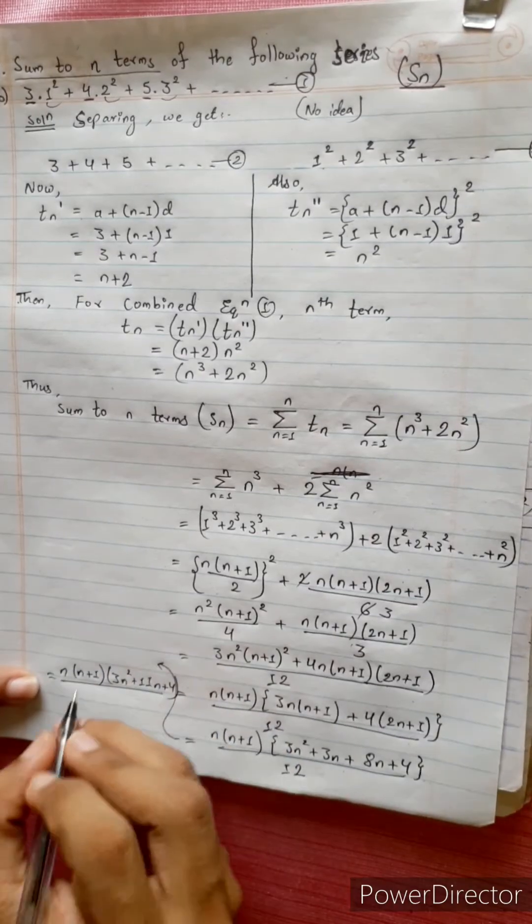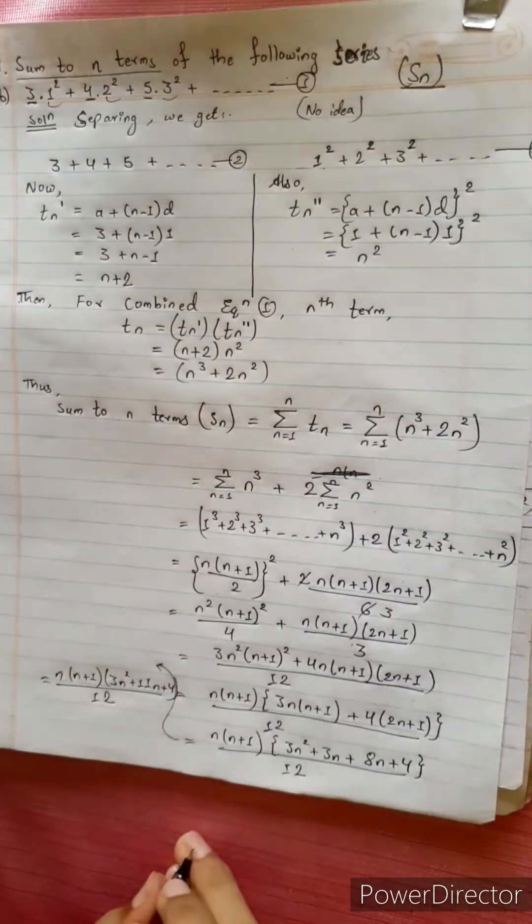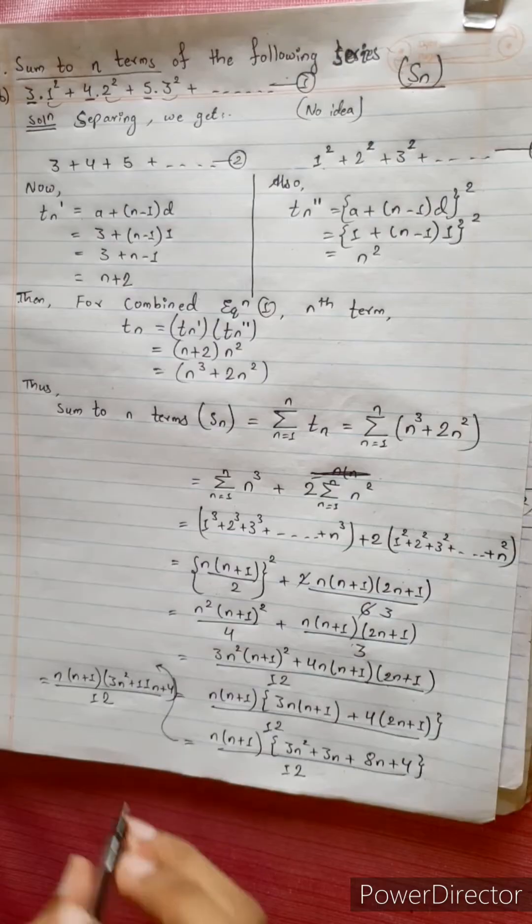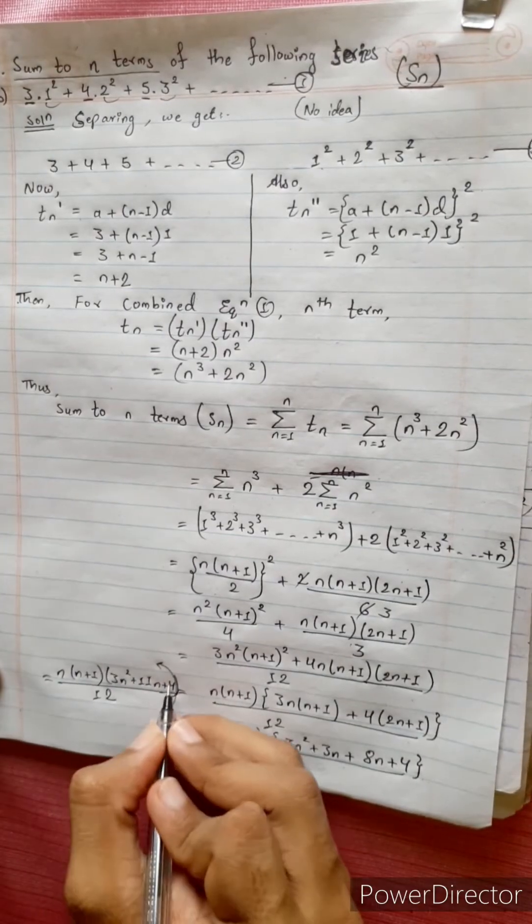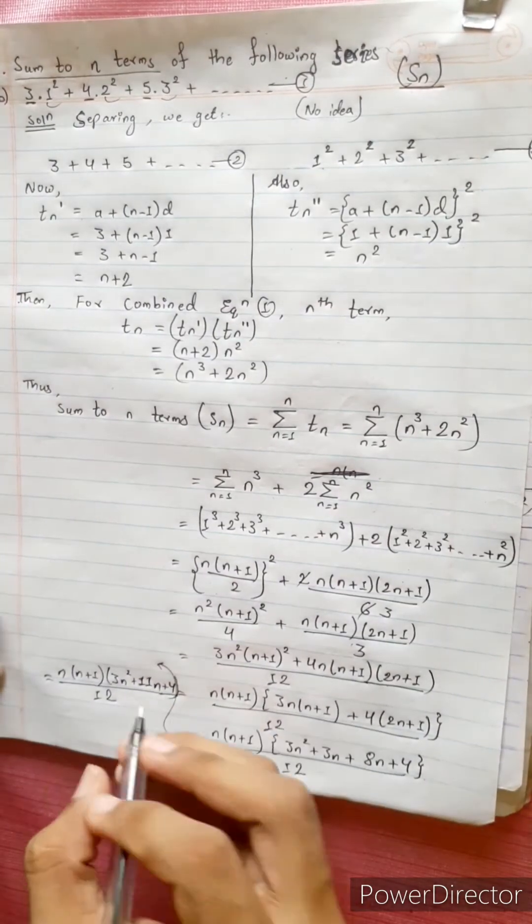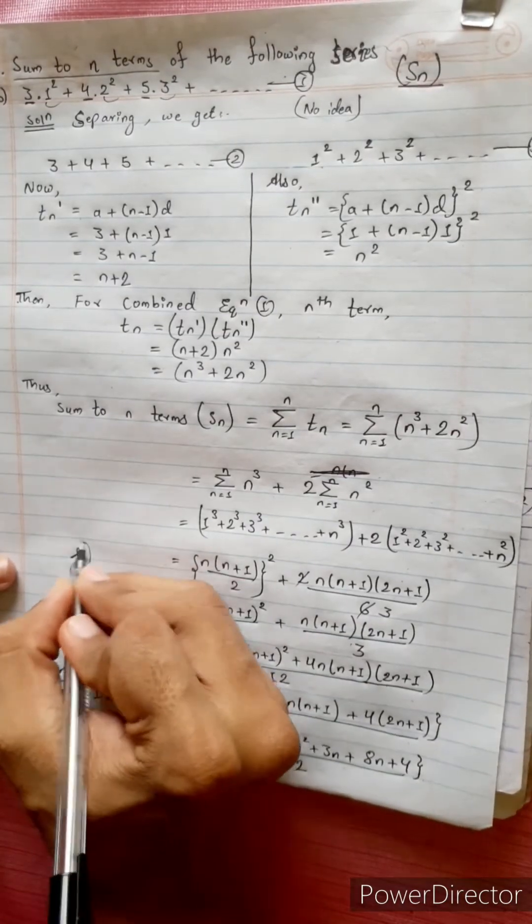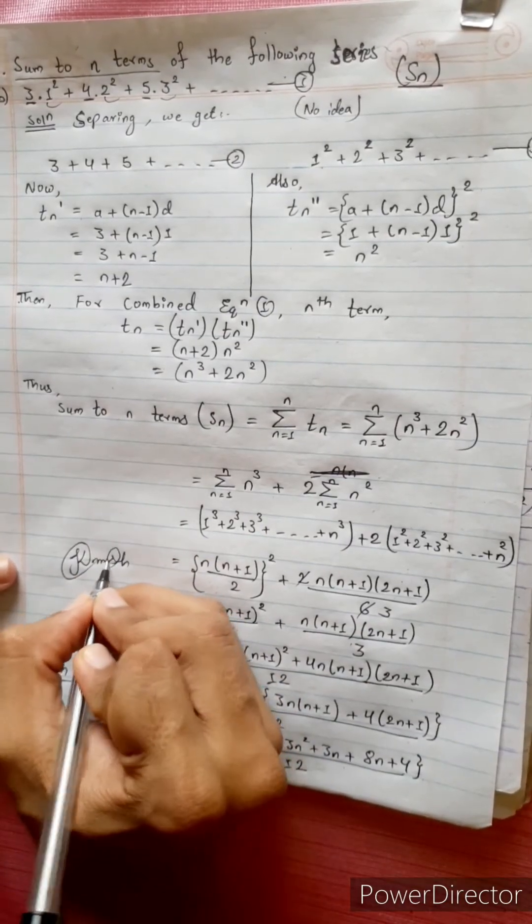Equals n times n plus 1 times 3n square plus 11n plus 4 divided by 12. The answer is n times n plus 1 times 3n square plus 11n plus 4 by 12. And we will see you later, bye bye.